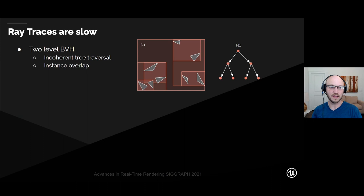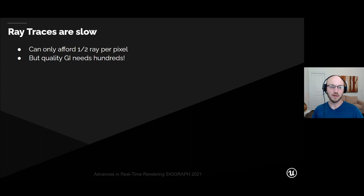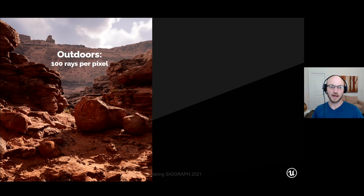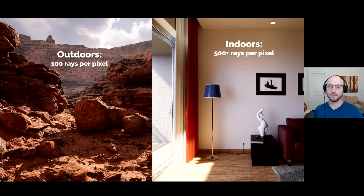The challenge with real-time ray tracing is that tracing rays is a very heavy operation — it's an incoherent tree traversal, and because it's a two-level bounding volume hierarchy, wherever instances overlap in space, we have to trace through that segment of the ray redundantly. We can only afford about half of a ray per pixel, but for good quality indirect lighting we actually need hundreds. Outdoors needs about 100 rays per pixel and indoors needs significantly more, making indoors the much harder problem where we'll focus most of our development.